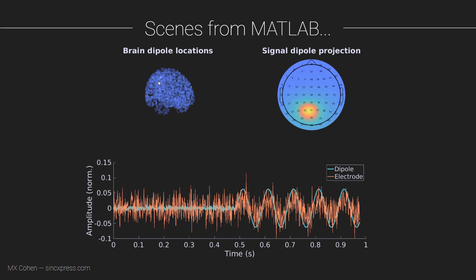In the brain, we have electrical dipoles that produce electrical fields which propagate through brain tissue, skull, and skin, and are measured as EEG at the scalp. These are our true underlying latent constructs — normally we don't have direct access to them, but in simulated data we actually do. The scalp sensors are our manifest variables — the things we can actually measure and convert into numbers.